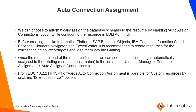Auto connection assignment means automatically assigning the database schemas to the source connections which were extracted after the metadata load of the resource. We can choose this feature by enabling the auto assign connections option under the metadata load settings of the resource in LDM admin UI. Before creating resources of the types mentioned earlier, it is recommended to create resources for the corresponding sources or targets and load them into the catalog. Once the metadata load of these resources completes, we can see the connections getting automatically assigned to the existing resources based on the best match in the LDM admin under manage connection assignment and auto assign connections tab.